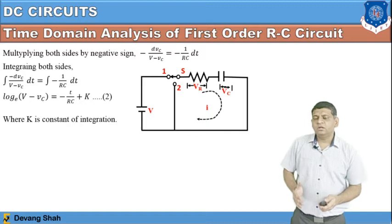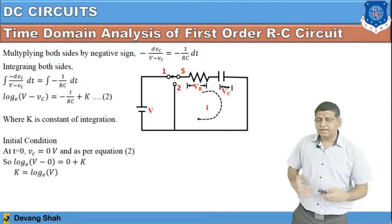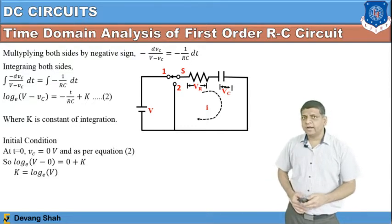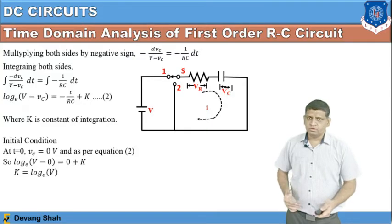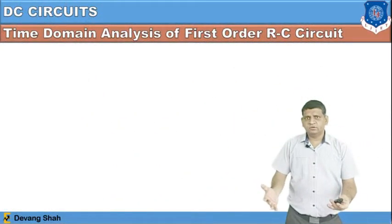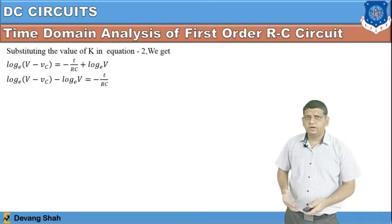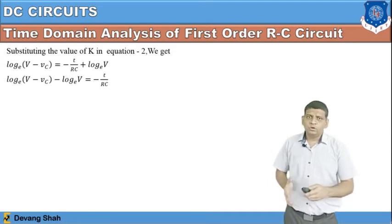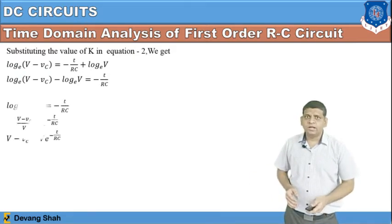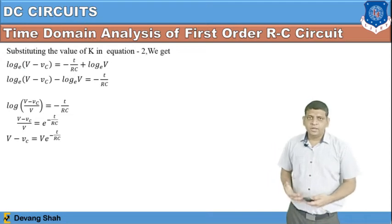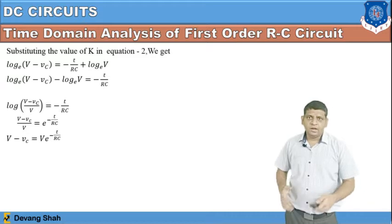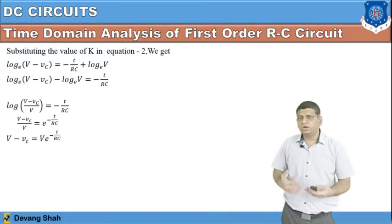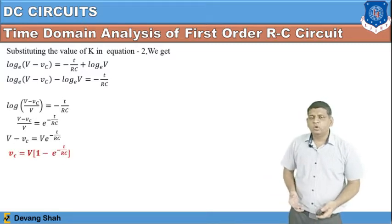At the initial condition, time t must equal zero. When t equals zero, the voltage across the capacitor must be zero. Substituting this into the equation gives K equals ln(V). Putting this value of K back into the overall equation gives ln(V minus Vc) equals minus T/RC plus ln(V), which rearranges to ln((V minus Vc)/V) equals minus T/RC. Solving for Vc, the final equation is Vc equals V·(1 minus e^(minus T/RC)).